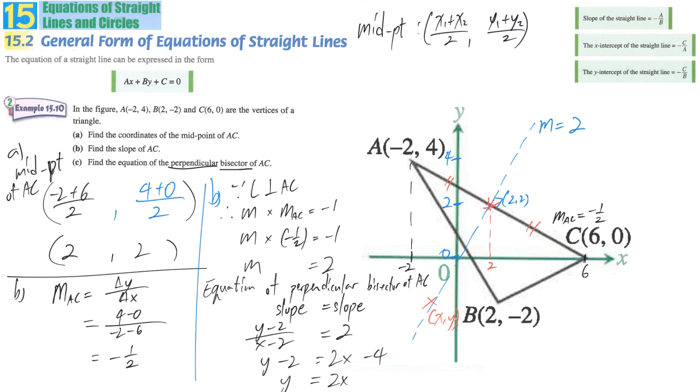So Y-2 equals 2(X-2). So Y is equal to 2X-2. Or in general form, you may write 2X-Y-2 equal to 0. They are just simply the same.